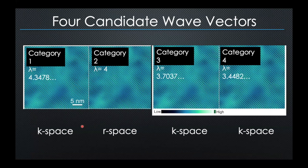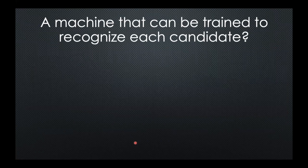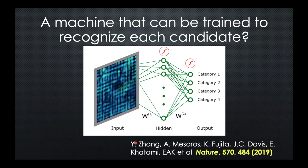These are four different categories that seem reasonable given the spread of the Fourier transform, each associated with a different leading wavelength. Category one, category two, category three, category four. Category two is the only one that's period four — that's commensurate. A commensurate wave vector is what we associate with real space; incommensurate wave vectors are what we associate with momentum space. So can we think of a machine that can be trained to recognize each of these candidates and tell us which motif it's seeing?